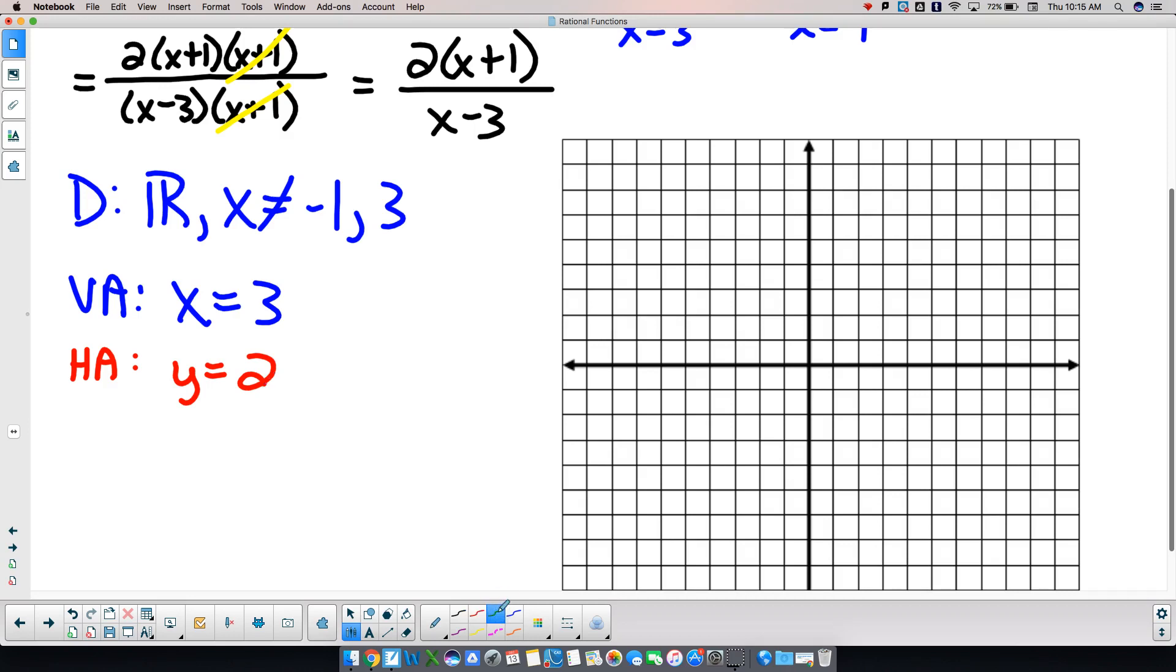In my new function, if I plug in 0 for x to find my y-intercept, I'd have 2 times 1, which is 2, all over negative 3, so I'd have 0 comma negative 2 thirds. In my new function, if I set my numerator equal to 0, first I'd divide by 2, then I would subtract 1, I'd get an x-intercept of negative 1 comma 0.